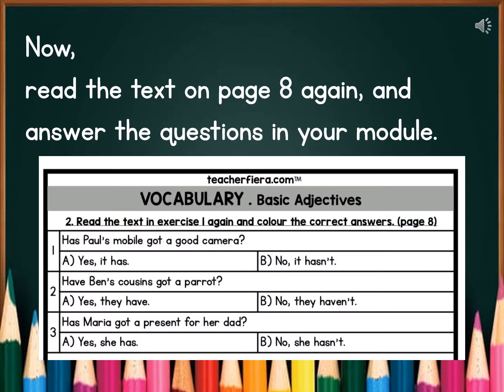Now read the text on page number 8 again in your English Plus 1 starter unit, and answer these questions in your module. The instruction in your module says: read the text in exercise 1 again and color the correct answer. So you must color the correct answer. For example, number 1: has Paul's mobile got a good camera? Read the text again. If your answer is A — yes it has — color 'yes it has.' And if your answer is B, then color B. So do this first.